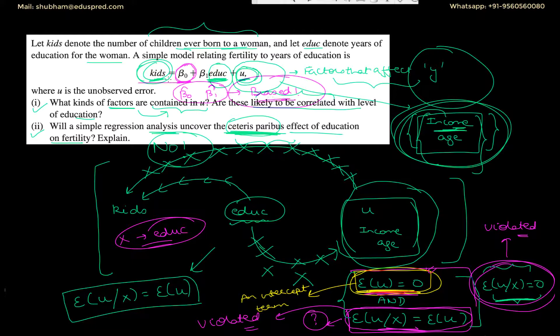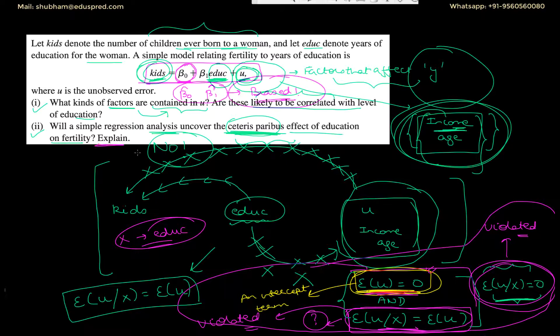In this particular case, if you estimate this model using OLS, your beta zero hat and beta one hat are going to be biased estimators, because this assumption is being violated. So we will not be able to uncover the ceteris paribus effect of education on fertility, because education is related to some factors in the error term, violating the assumption and resulting in biased OLS estimators.